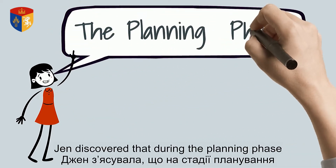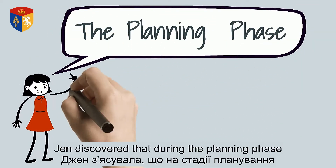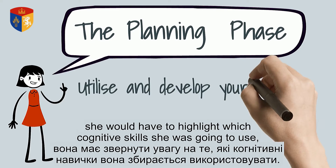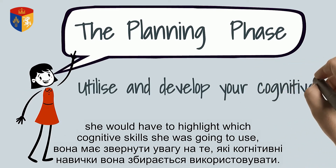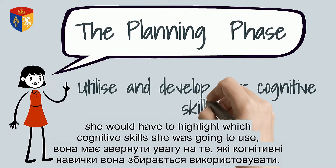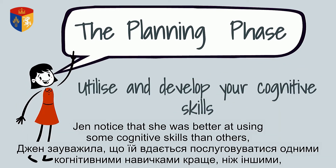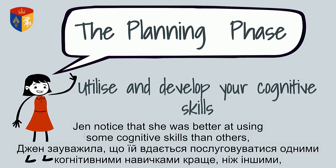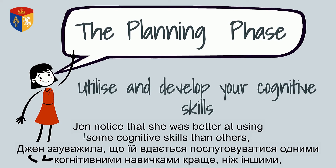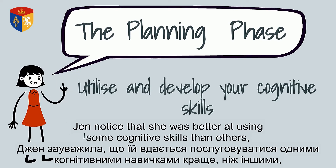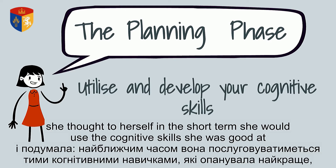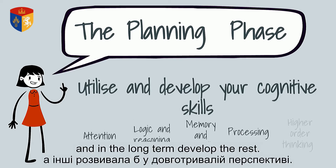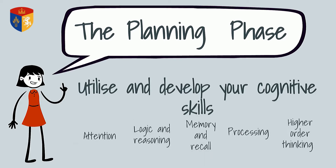Jen discovered that during the planning phase, she would have to highlight which cognitive skill she was going to use. Jen noticed that she was better at using some cognitive skills than others. She thought to herself: in the short term, she would use the cognitive skills that she was good at, and in the long term, develop the rest.